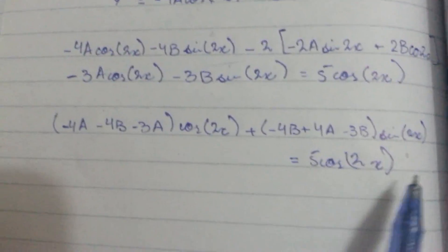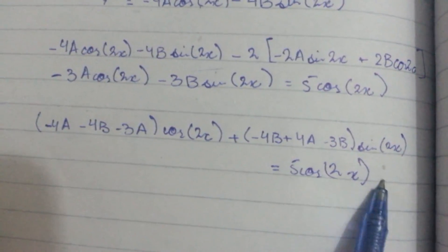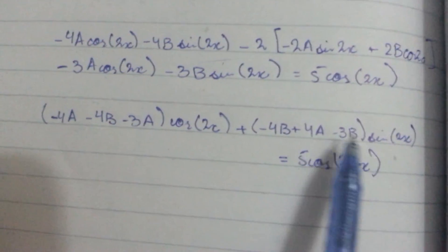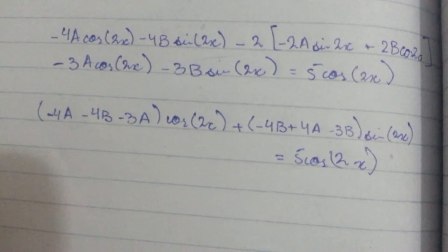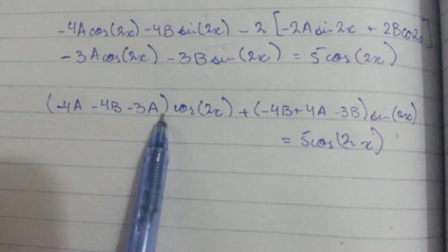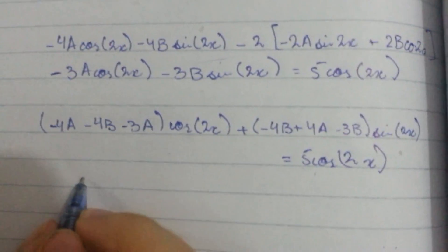Now there is no term as sin 2x on the right side. So the sin values will be put equal to 0 and this will be put equal to 5.